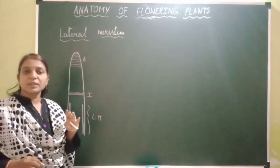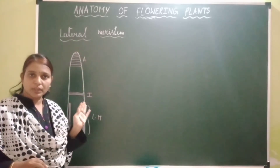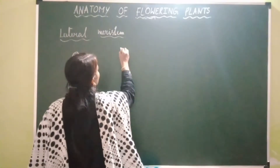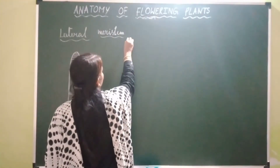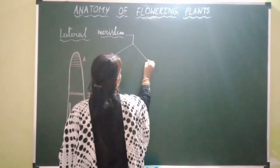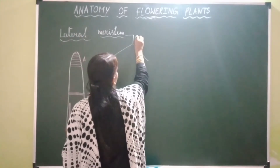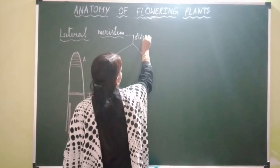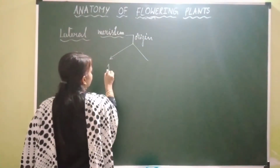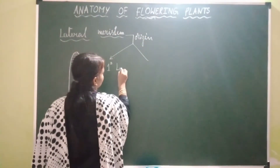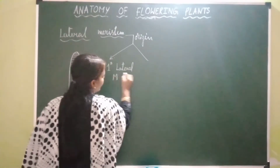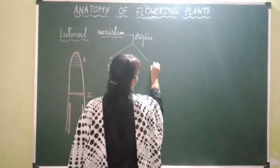On the basis of origin, this lateral meristem is of two types: primary lateral meristem and secondary lateral meristem.